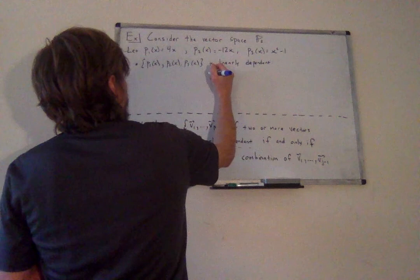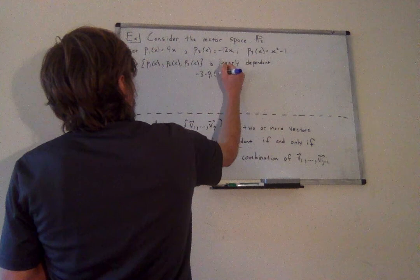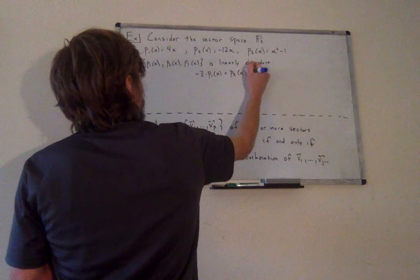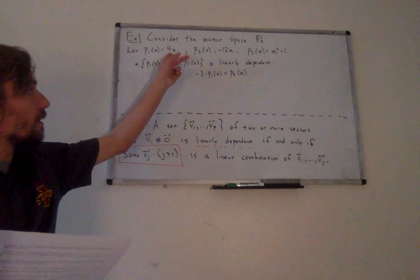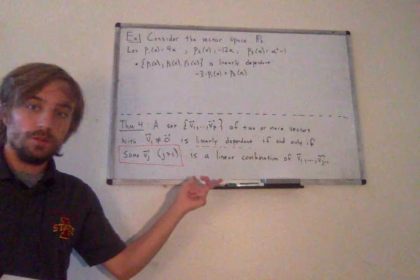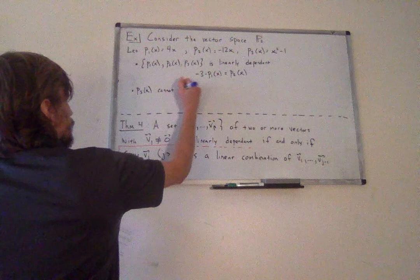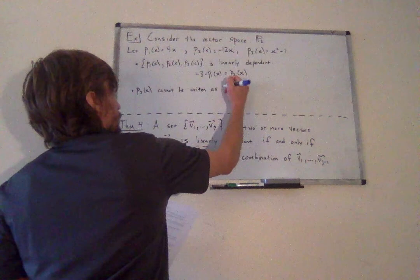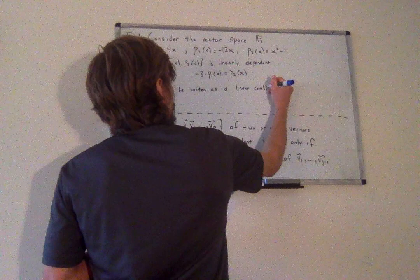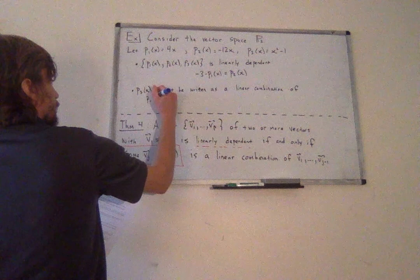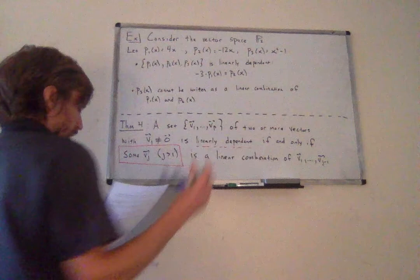Notice that the set {p1(x), p2(x), p3(x)} is linearly dependent, because p2(x) can be written as a linear combination of p1(x) — there's some constant that when multiplied by p1 gives p2. This, along with the theorem, is enough to show that this set is linearly dependent. But importantly, p3(x) actually cannot be written as a linear combination of p1(x) and p2(x).